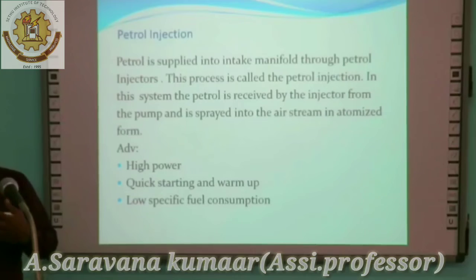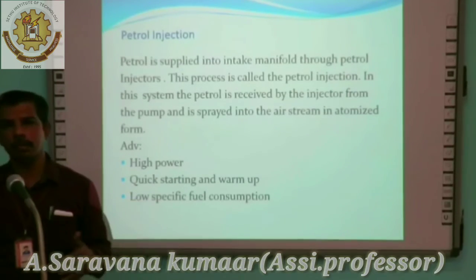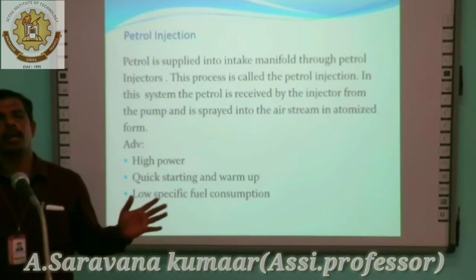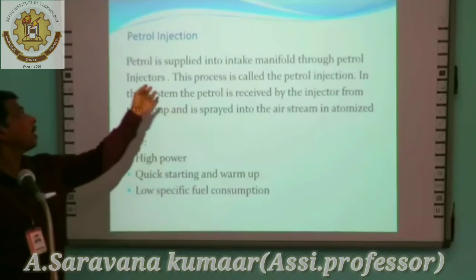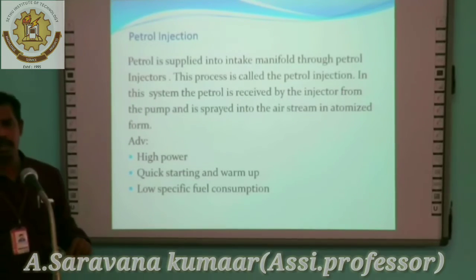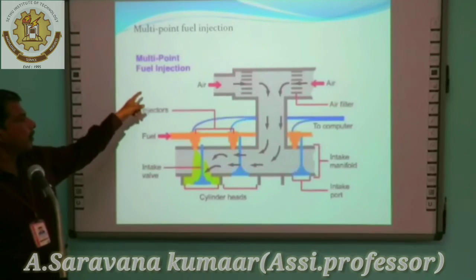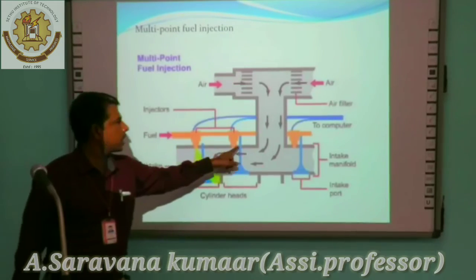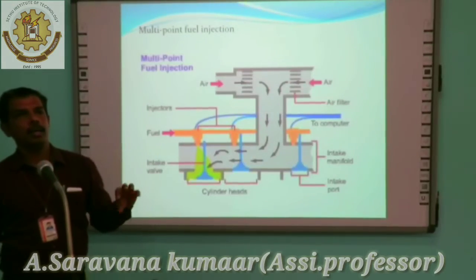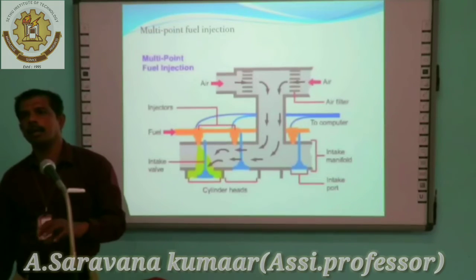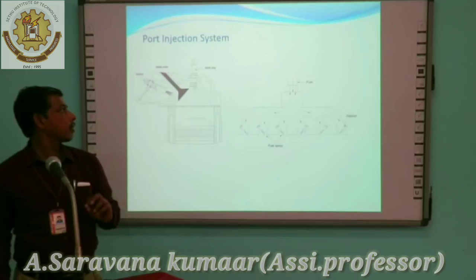Now we have already seen the spark ignition engine fuel system and the compression ignition fuel system. We are now entering into the latest fuel supply systems in automobiles. Here is petrol injection — petrol is injected into the cylinder. Here is multipoint fuel injection, where the fuel is injected in each cylinder. High-pressure fuel is maintained in a rail, and the fuel is injected in each and every cylinder whenever the timing is required.